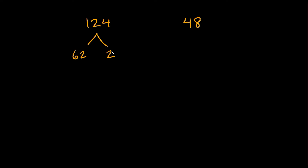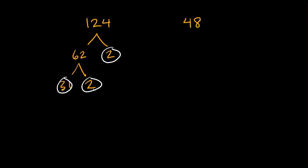Do we have any prime numbers? Yes — we have this 2, so just circle it or underline it to mark it. Now 62 we can keep breaking down: 62 is even so we divide by 2 and get 31 times 2. When you break something down, ask yourself: do we have any prime numbers? Yes — 31 and 2 are both prime numbers. So 124 is completely factored.